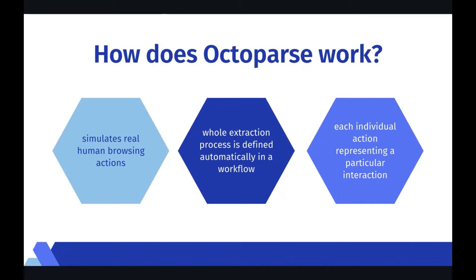The whole extraction process is defined automatically in a workflow, with each individual action representing a particular interaction with the target webpage. When you are building a scraping task in Octopus, you are essentially creating a scraping workflow that can be translated into a series of instructions for Octopus to follow through. This workflow, however, is created automatically by Octopus while you are interacting with the building browser and the tips panel. In some cases you may not need to modify the auto-created workflow, yet in other cases you may need to build or troubleshoot the workflow manually if things are not working as expected. In either case, it is strongly recommended that you grasp the basics of the workflow so you can script more precisely and accurately.